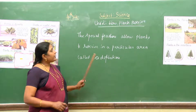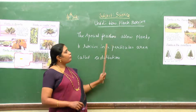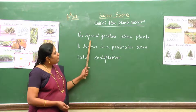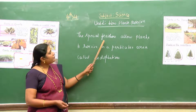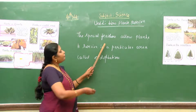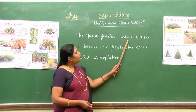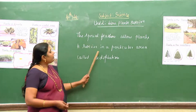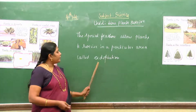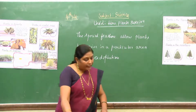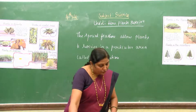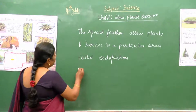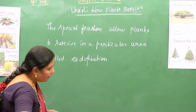As like animals, the plants are not moving from place to place. So the plant body has special features that allow the plants to survive in a particular area, called adaptation. Now we will discuss some of the adaptations among plants.